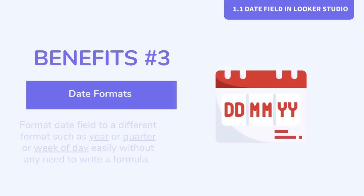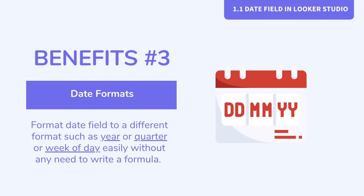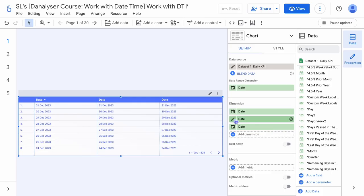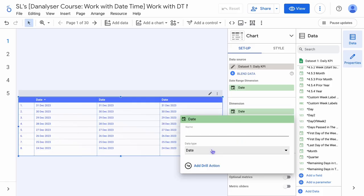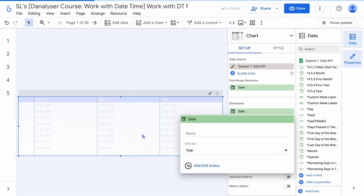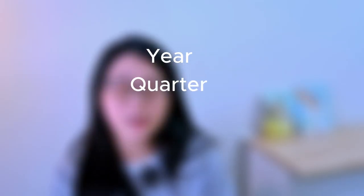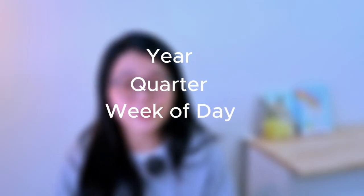Next, with a date field you will also get date-specific formatting options. You can format the date field into a different date format, such as year, quarter, or week of date, easily without any need to write a formula. This can be done with just a few clicks — no formula — and it makes your reporting a breeze.